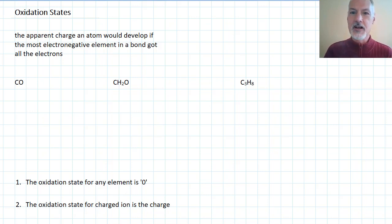Welcome to our next unit on reduction and oxidation. In order to understand how reduction and oxidation work, we need to take a look at the meaning of the word oxidation state. It's the apparent charge an atom would develop if the most electronegative element in the bond gained all the electrons. I'm going to work through a few examples to go through this definition.